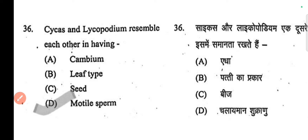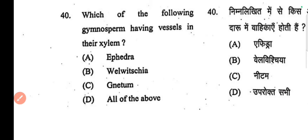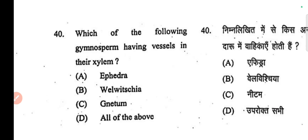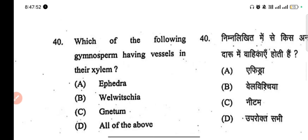Cycas and Lycopodium resemble each other in having motile sperm. Next question: which plant has vessels in their xylem? The correct answer is A.